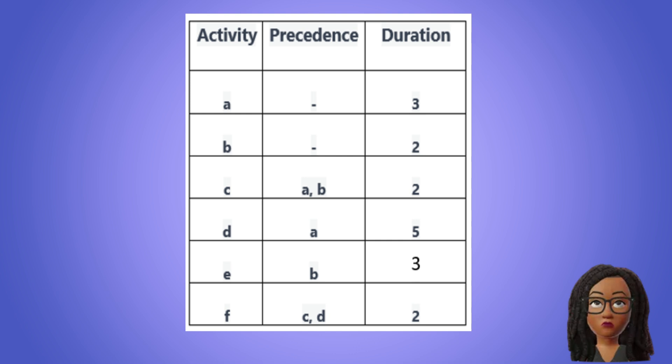This table tells us the activities in the project, the precedence, or in other words, the activities that must be completed before the specified activity can start,